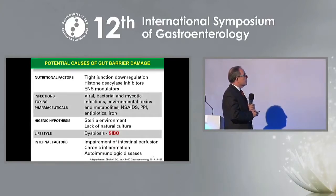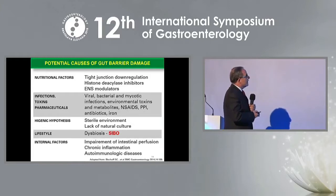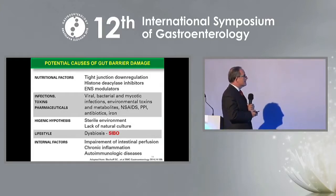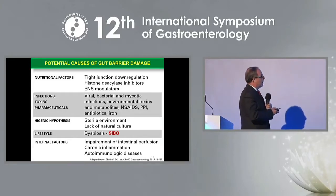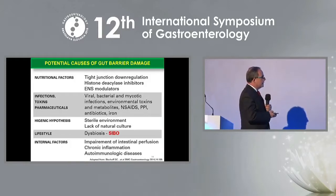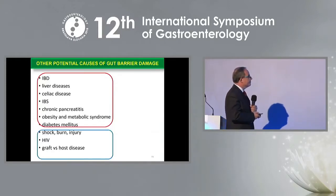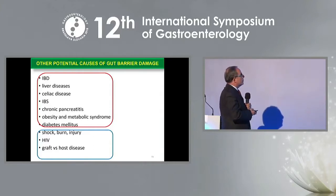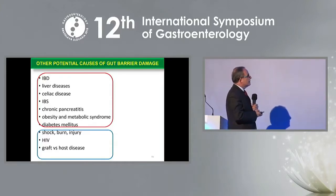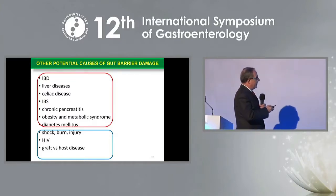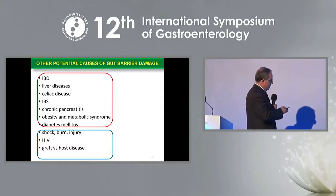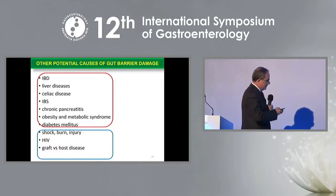Potential causes of gut barrier damage include nutritional factors, infections, toxins, pharmaceuticals, and many others. Among them, one of the most important is SIBO. There are also other potential causes, including diseases in the GI tract and other systemic diseases.